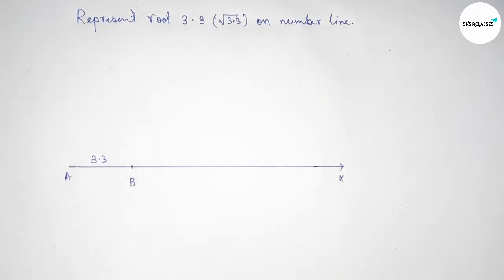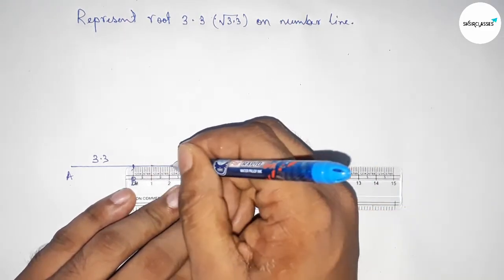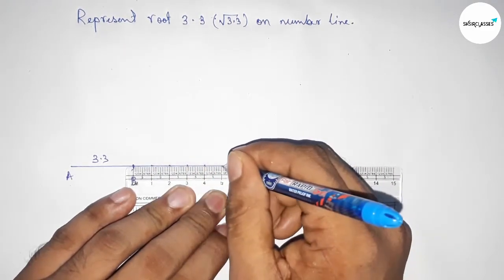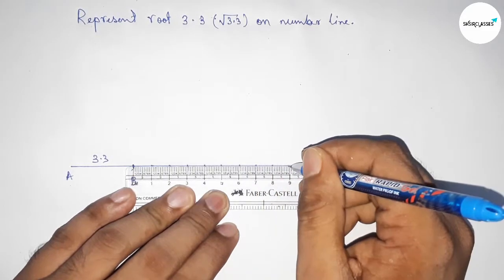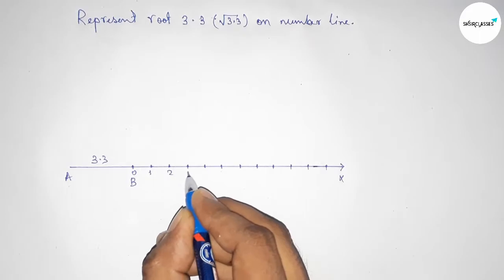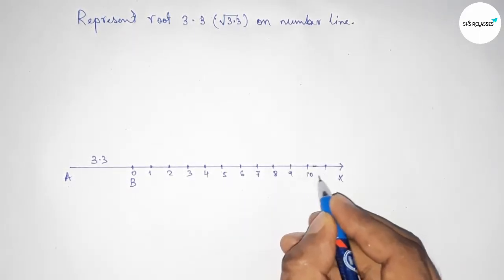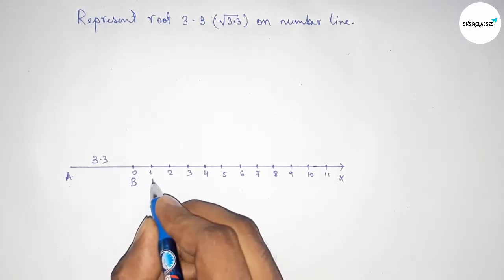Next, mark the numbers from B to X on the line. Mark the numbers this way: 0, 1, 2, 3, 4, 5, and so on. Next, this is point C.